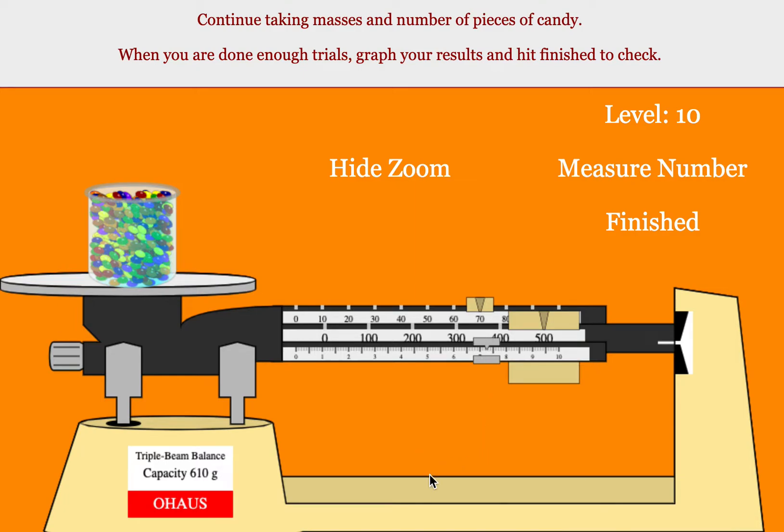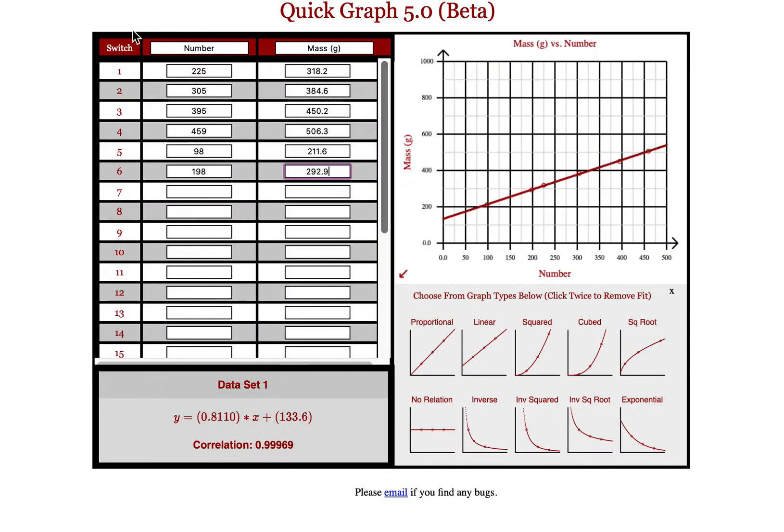Once you've done all your different levels, at least five. Again, more is better. You want to take it into a graphing program. The number of pieces should be on your x-axis. The mass of the system should be on the y-axis.